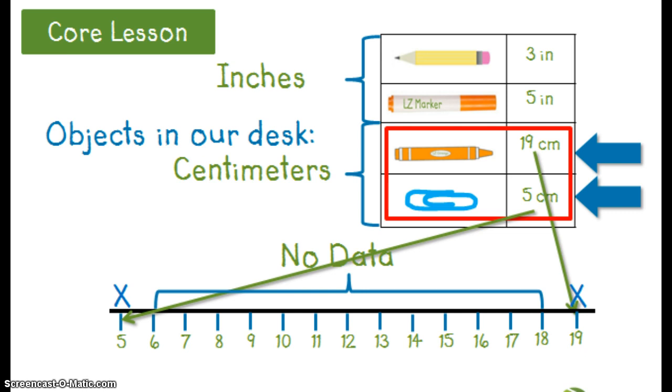I notice that the largest measurement is 19, so I know that the number line needs to extend from 5 to 19. Since our horizontal axis is labeled correctly, we are ready to plot our data. We have a crayon which is 19 centimeters, so we locate 19 centimeters on our line plot and mark an X on the spot.